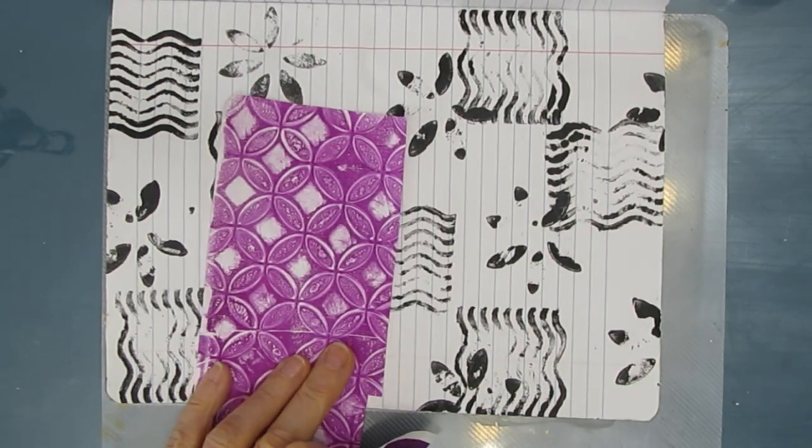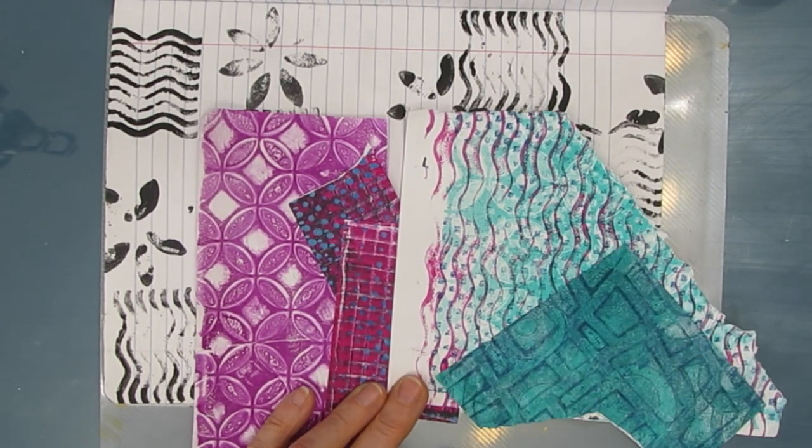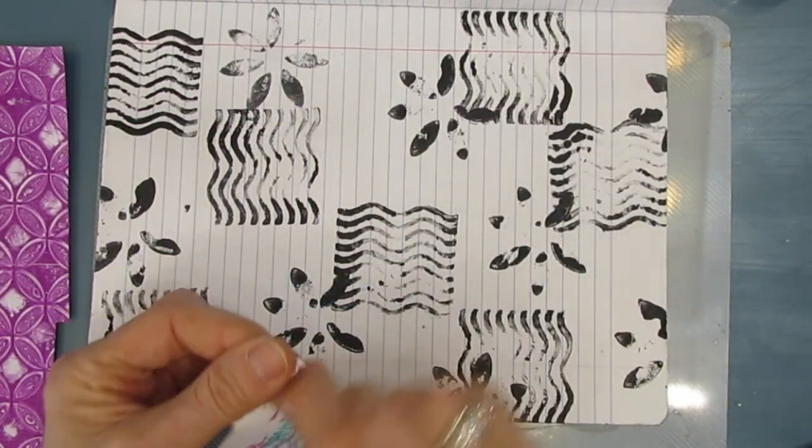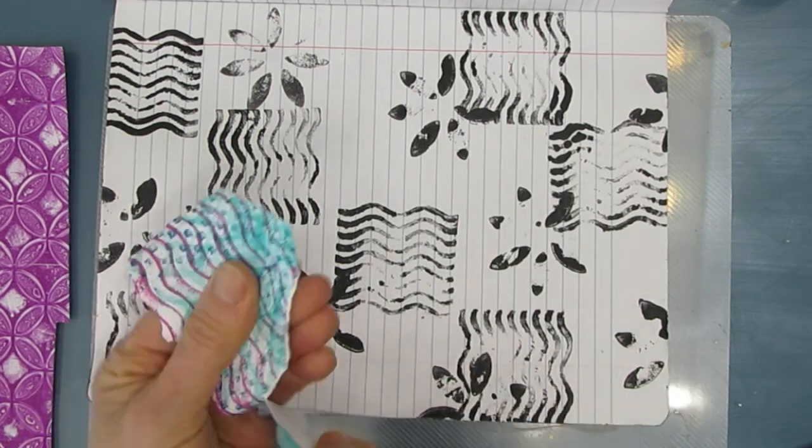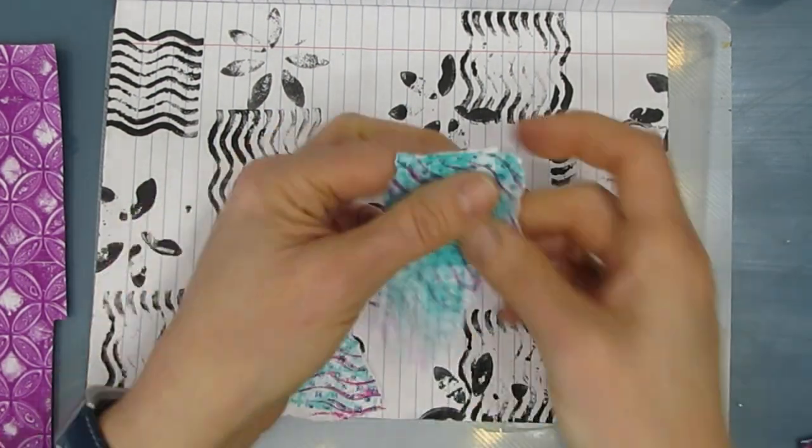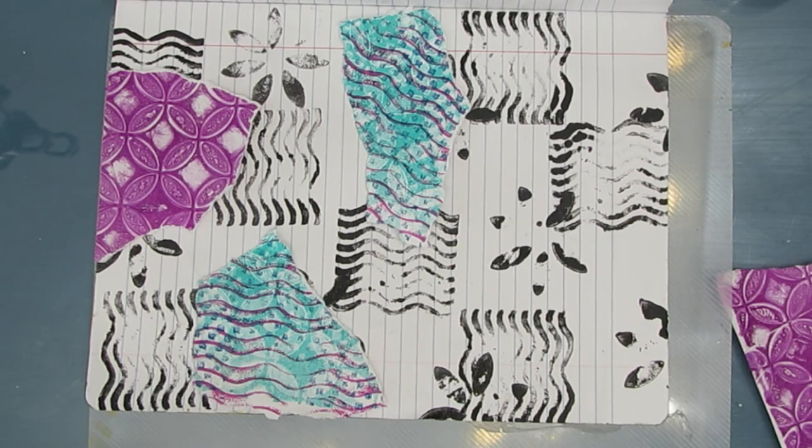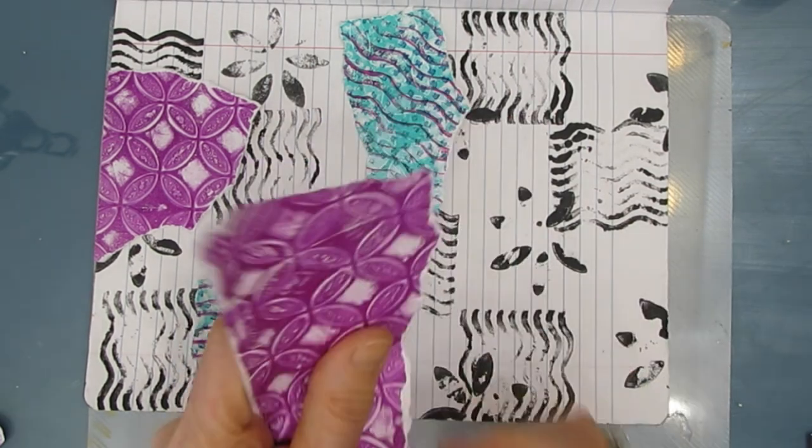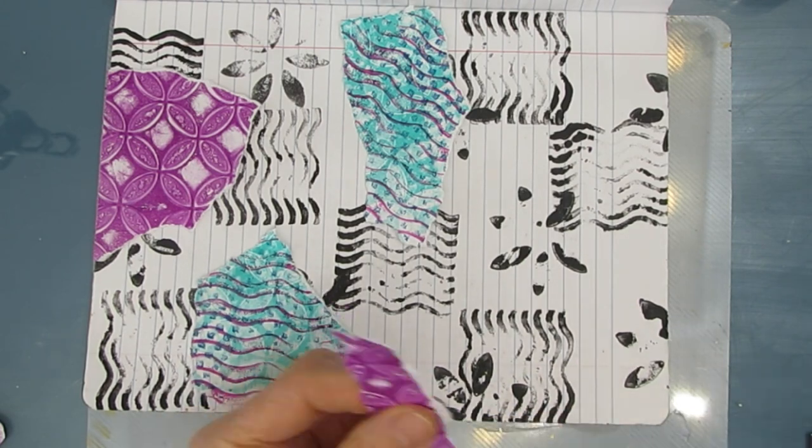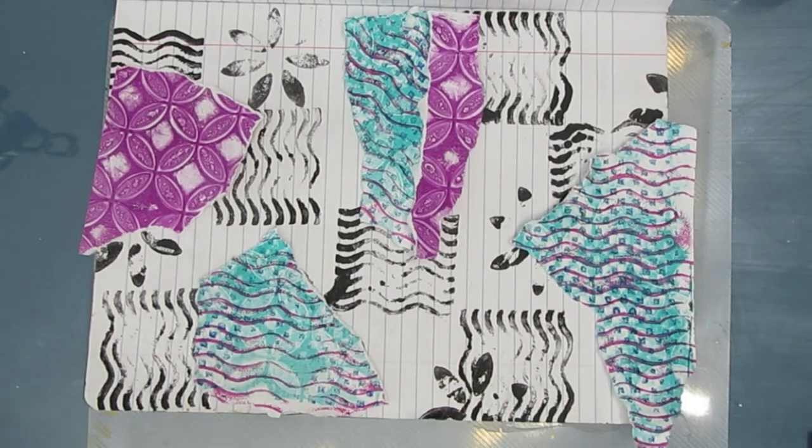Now I have some of the magenta and teal here and I'm matching it to a background that I've already broken with some of my DIY foam stamps. So now I'm just going to rip some odd shapes. I don't like straight edges and build some color onto this page. I like how these gel prints mirror the patterns that I've stamped.